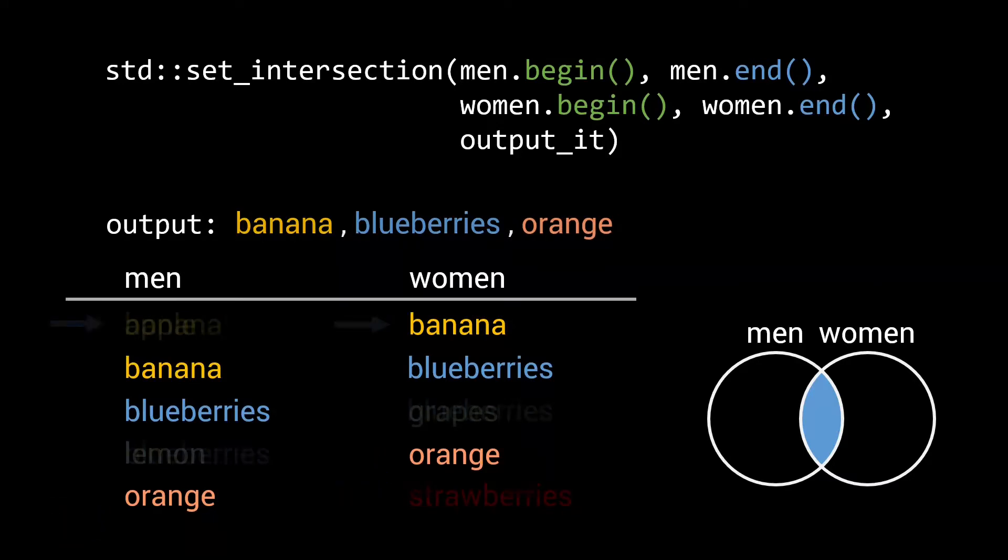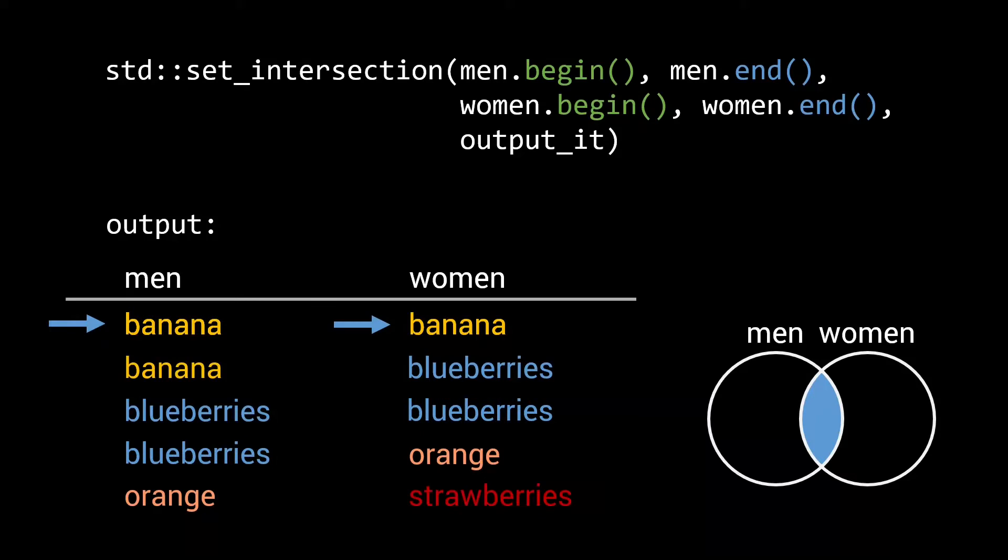Things get more interesting when there are duplicates among the inputs. Here the algorithm first finds the banana element to be common among the two sets and adds it to the output.